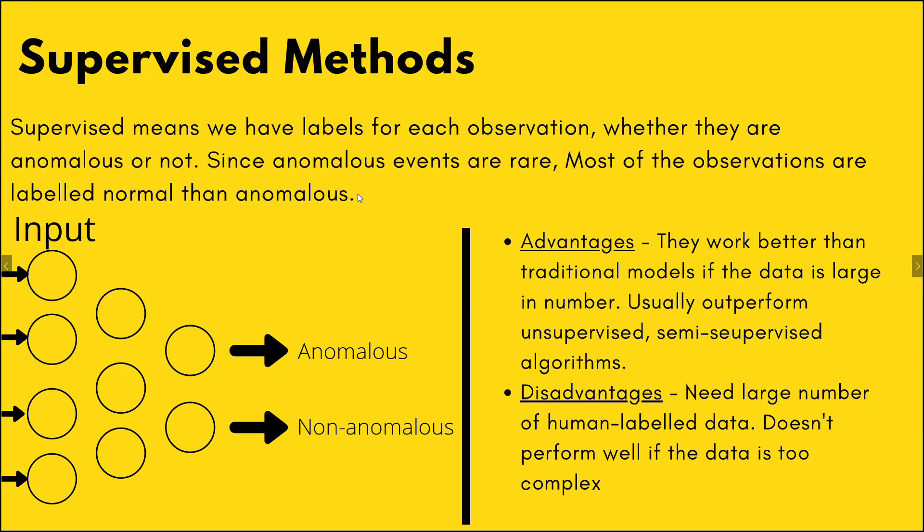There are three classes of methods to detect anomalies using machine learning. First is supervised methods — supervised means we have labels for every data point, whether it is anomalous or not. The data is processed by the machine learning or deep learning algorithm and classified as anomalous or non-anomalous. The advantage is that it traditionally works better than unsupervised or semi-supervised algorithms because you have all the information. The disadvantage is that you need a lot of human intervention to label the data, which is not scalable.